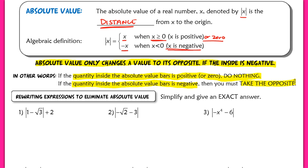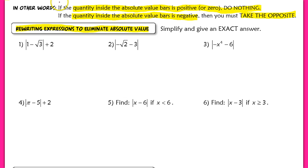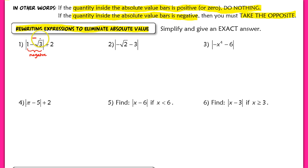Absolute value only changes a value to its opposite if the inside is negative. If the quantity inside the absolute value bars is positive or zero, you do nothing. If the quantity inside is negative, you take the opposite. We'll use this two-case function to rewrite expressions and eliminate absolute value bars. In example one, the inside is one minus root three. Since root three is larger than one, the inside is negative, so we take the opposite of one minus root three.